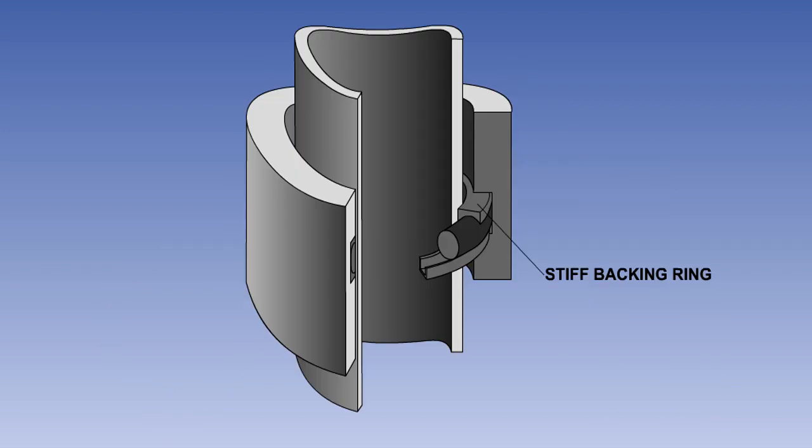Where high pressures are used, an O-ring is normally fitted with a stiff backing ring, which retains the shape of the seal and prevents it from being squeezed between the two moving surfaces.